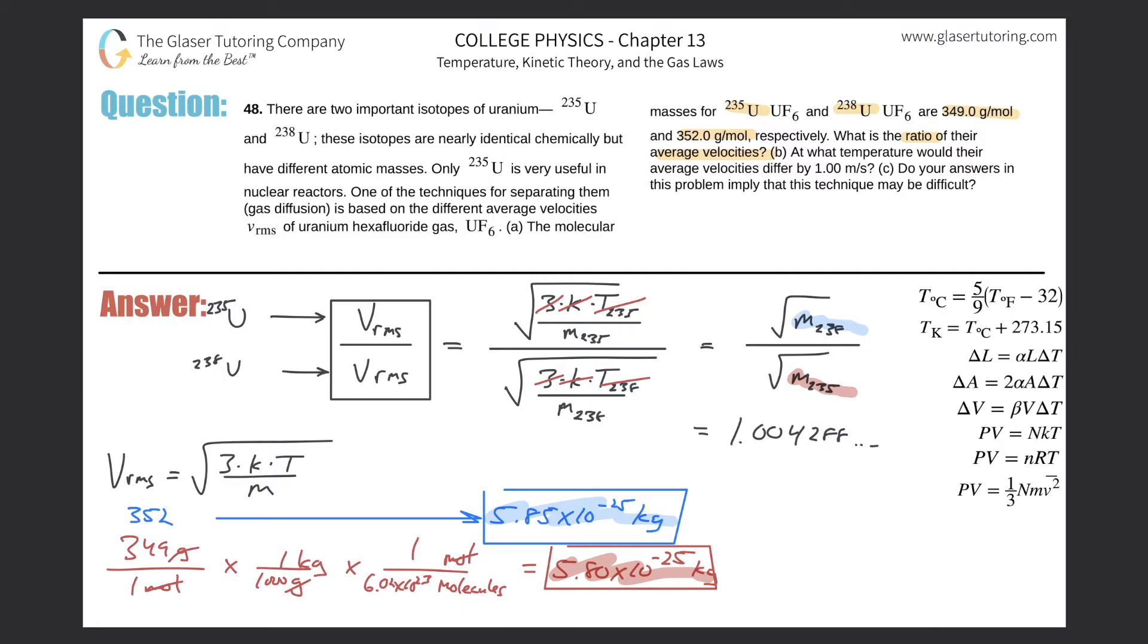This would be the answer. This would be the ratio between the root mean square of 235 relative to 238, meaning the velocities are basically the same. What you could have done is simply plugged in the gram per mole value into this ratio, because this part stayed the same for both calculations and they would have canceled anyway. So you could have put the molar mass of 238 on the top, square root of 352, divided by square root of 349. And what do you get? The same number. That was the shortcut.